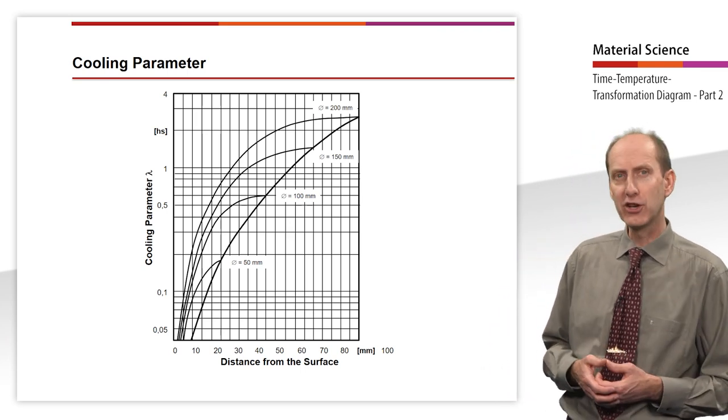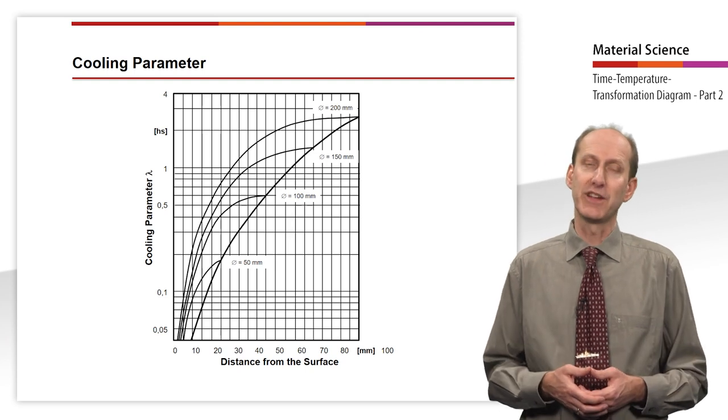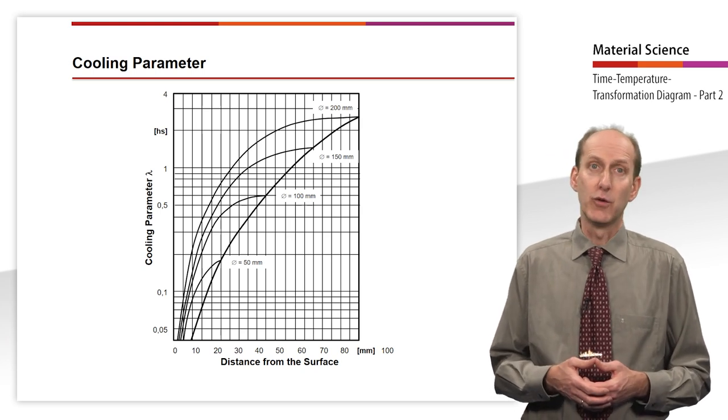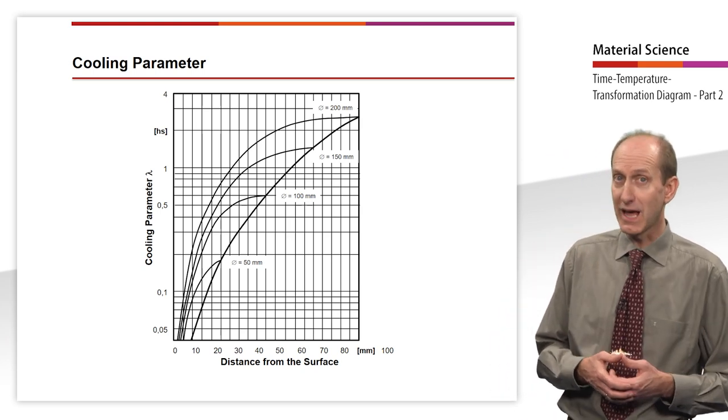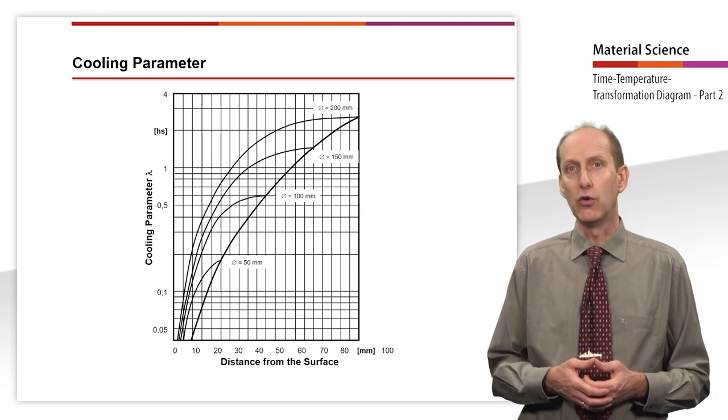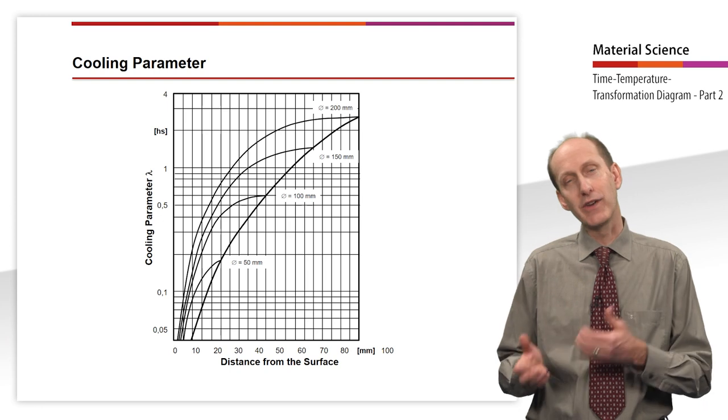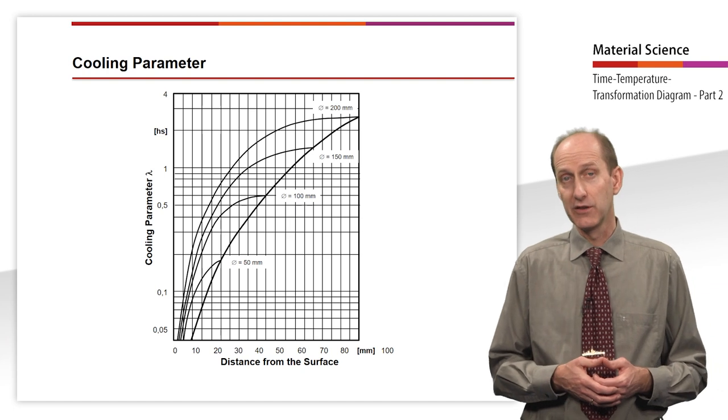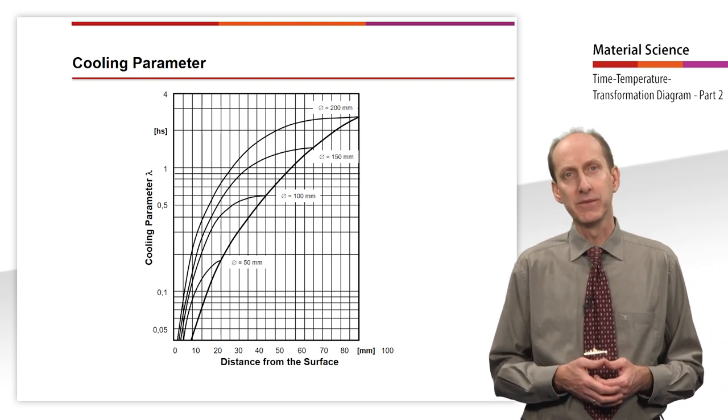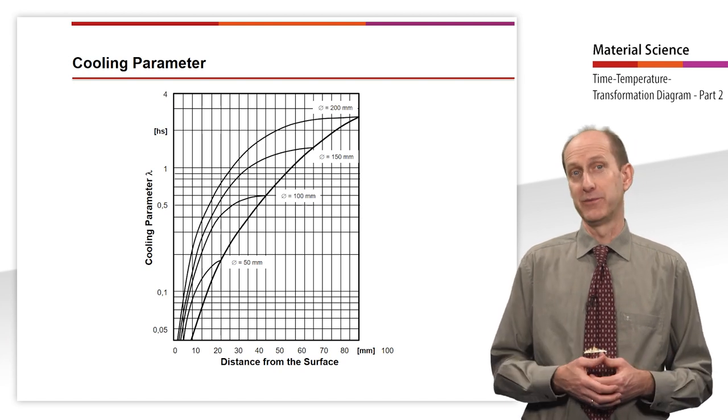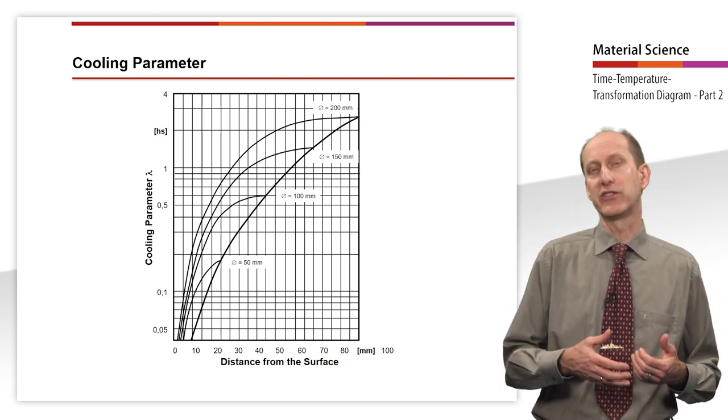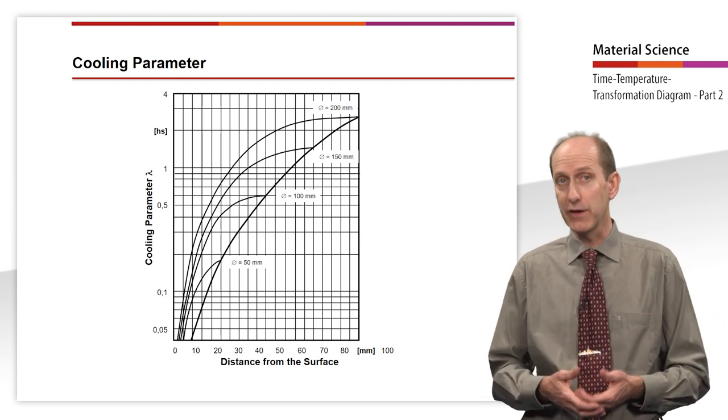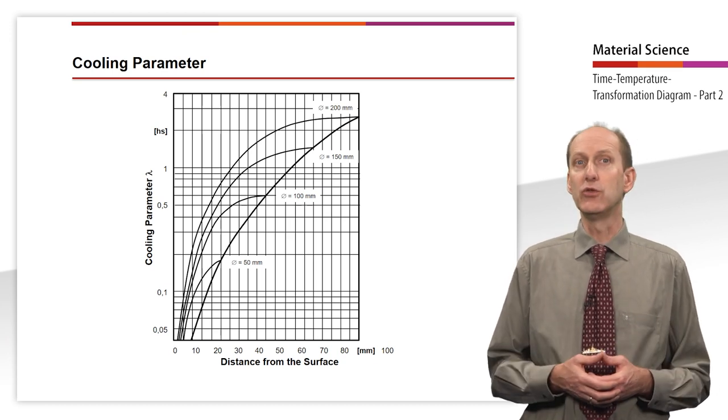Often the cooling curve cannot be measured under operating conditions and must be estimated. For this purpose, the diagram shown can be used from which the cooling parameter lambda for the cooling time of the core or surface from 800 to 500 degrees Celsius can be taken for various diameters when cooled in water. The cooling parameter lambda denotes the time required to cool a steel specimen from 800 to 500 degrees Celsius expressed in the unit hectoseconds.